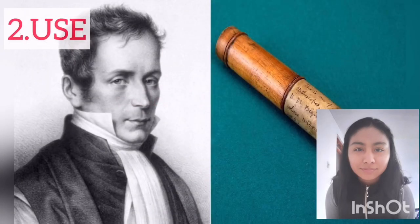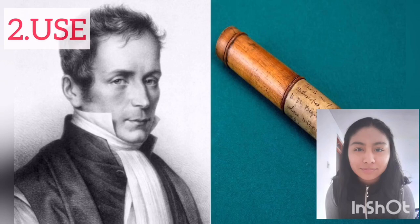A stethoscope is used to detect and study heart, blood, stomach, and other sounds in humans and in animals. Using a stethoscope, the listener can hear normal or abnormal respiratory, cardiac, pleural, arterial, venous, uterine, fetal, and intestinal sounds.